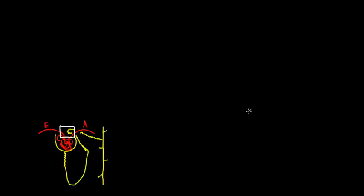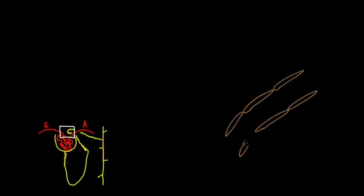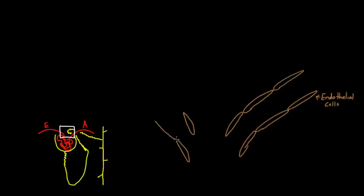Let's start with the afferent arteriole. I'm going to start drawing it here. These are the endothelial cells lining that blood vessel, that arteriole. And on this side we have the same endothelial cells, but now it's leaving the glomerulus - so we've got blood coming and going.